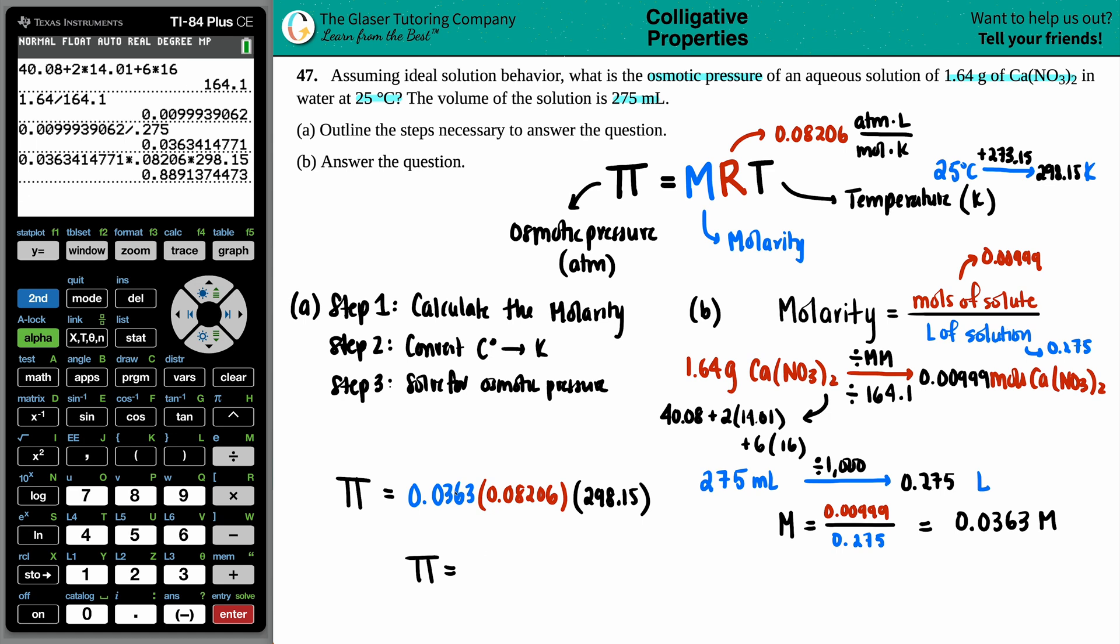So we get an osmotic pressure, because that's what we're solving for, of 0.889. I guess we'll do three sig figs, so 0.889, and that's atm. And that is the final answer. There's your osmotic pressure.